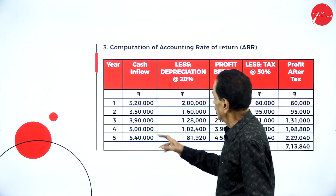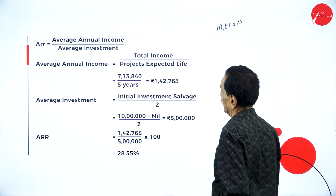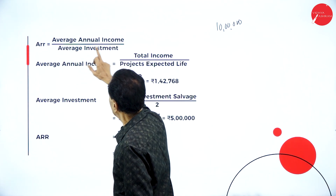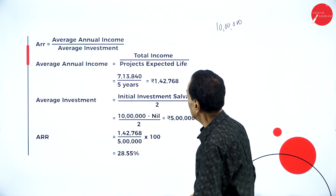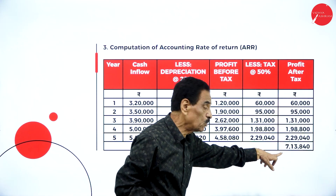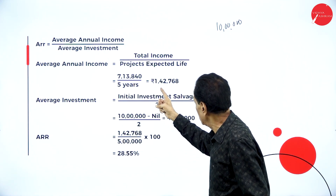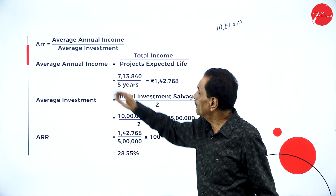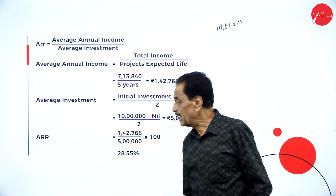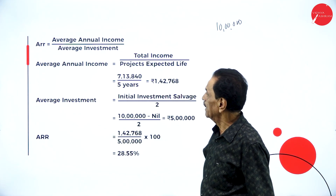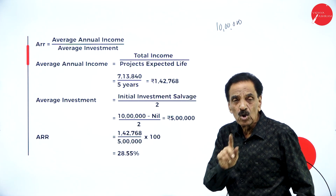Accounting Rate of Return: ARR equals average annual income divided by average investment. Average annual income equals total income divided by project life. Total profit after tax for 5 years is 7 lakh 13 thousand 840, divided by 5 years, giving average annual income of 1 lakh 42 thousand 768. Average investment equals initial investment of 10 lakh divided by 2, giving 5 lakh. ARR equals 1,42,768 divided by 5 lakh into 100, which is 28.55 percent.